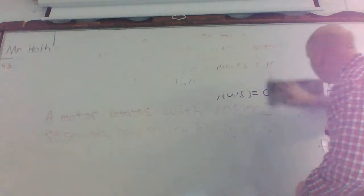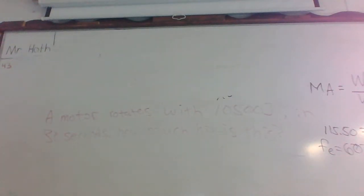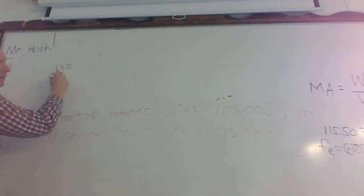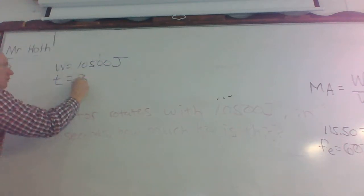Okay, so now, for this bottom question, okay? It says a motor, a motor rotates with 10,500 joules in 30 seconds. How much horsepower is that? Okay, well, what type of number is joules? Joules is work. Well, what happens if you divide work by time?